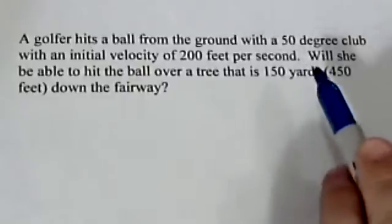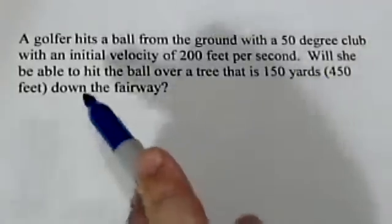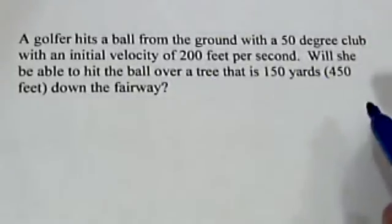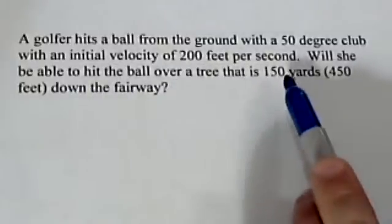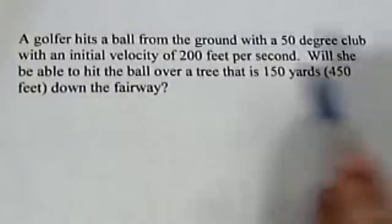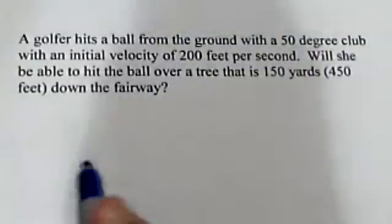Here's a golf ball problem. A golfer is going to hit the ball from the ground with a 50 degree club with an initial velocity of 200 feet per second. Will she be able to hit the ball over a tree that's 150 yards, convert that to 450 feet, down the fairway?